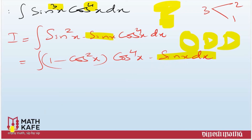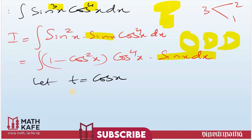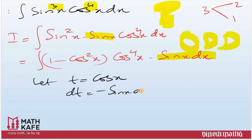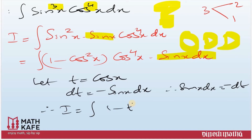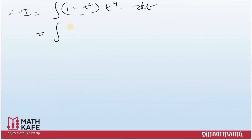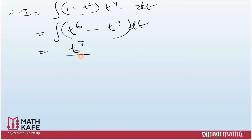Rewrite sin²x as (1 - cos²x) · cos⁴x · sinx dx. Notice sinx is pushed to the last because we already know what substitution to use. Let t = cos x, then dt = -sinx dx, so sinx dx = -dt. Substituting back: (1 - t²) · t⁴ · (-dt). Expanding: -(t⁴ - t⁶) dt = (t⁶ - t⁴) dt.